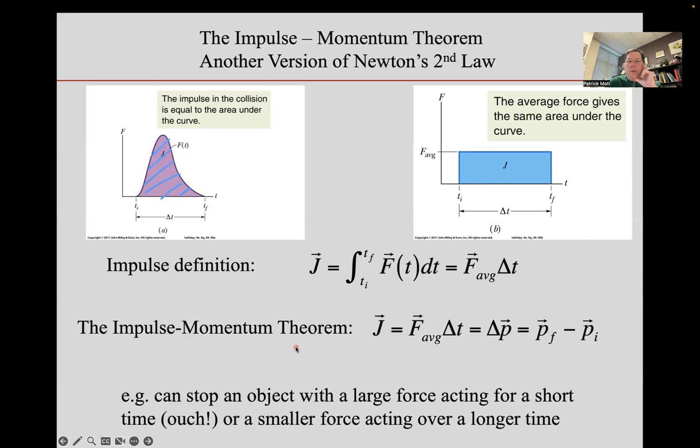So when we write out the impulse momentum theorem, we have that same impulse J. But now we'll think of it in terms of an average constant force over the time interval of the interaction and the impulse causes a change of momentum. And this is just Newton's second law of motion again, you're saying that the average net force is equal to the change in momentum over a change in time. We're just letting the time interval go from infinitesimal to perhaps something short but finite like the time that a bat and a ball are colliding with each other.